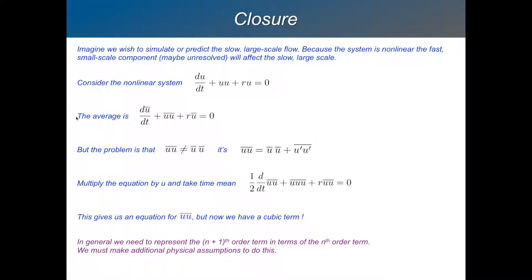So let's say that we take the time average of that equation. So d by dt of u bar, but u bar is not necessarily the time, it could be some low frequency component, is equal to the average bar of u times u and r times u bar.